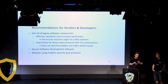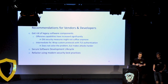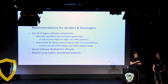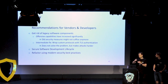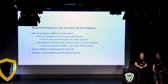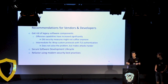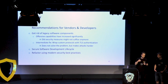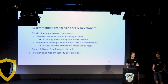For vendors and developers: the most important thing is to get rid of legacy components. Offensive capabilities have increased significantly in the last 20 years, and old security measures no longer hold. An immediate fix could be to wrap custom protocols in TLS with authentication — this doesn't fix the underlying problem, but provides more of an obstacle. In general, use a secure software development lifecycle — but apply it not just to new code. Revisit all old components, because wrapping your insecure old core in new fancy secure APIs doesn't help if an attacker can still talk directly to the old core using hard-coded keys.